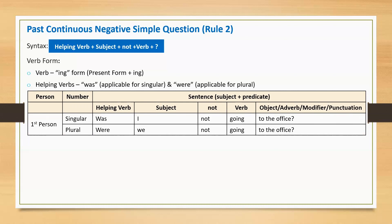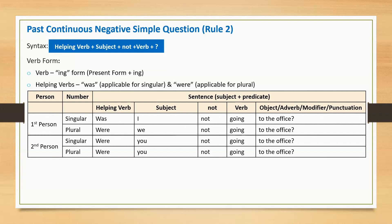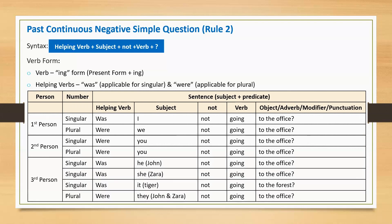First person plural: Were we not going to the office? Second person singular: Were you not going to the office? Second person plural: Were you not going to the office?